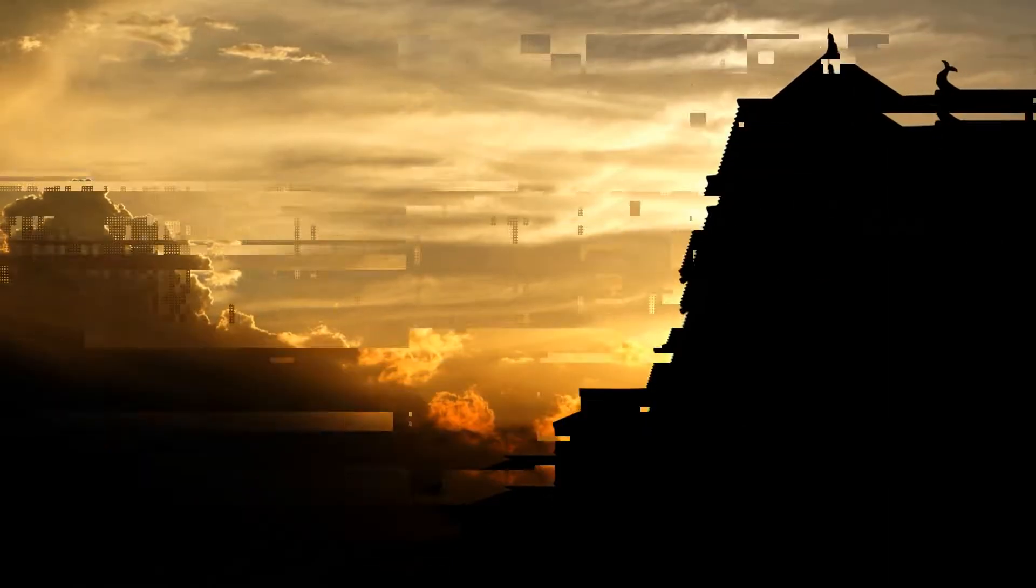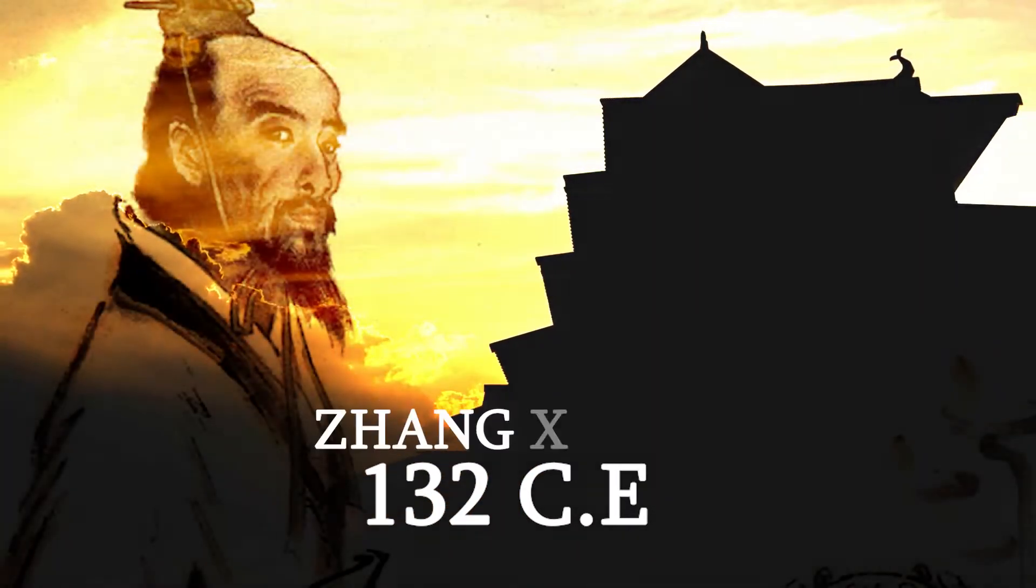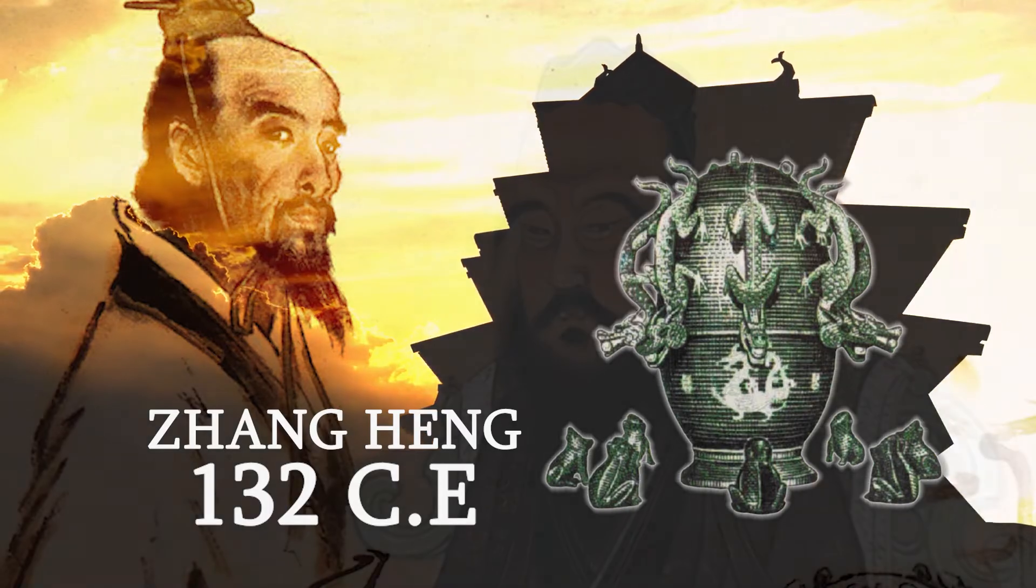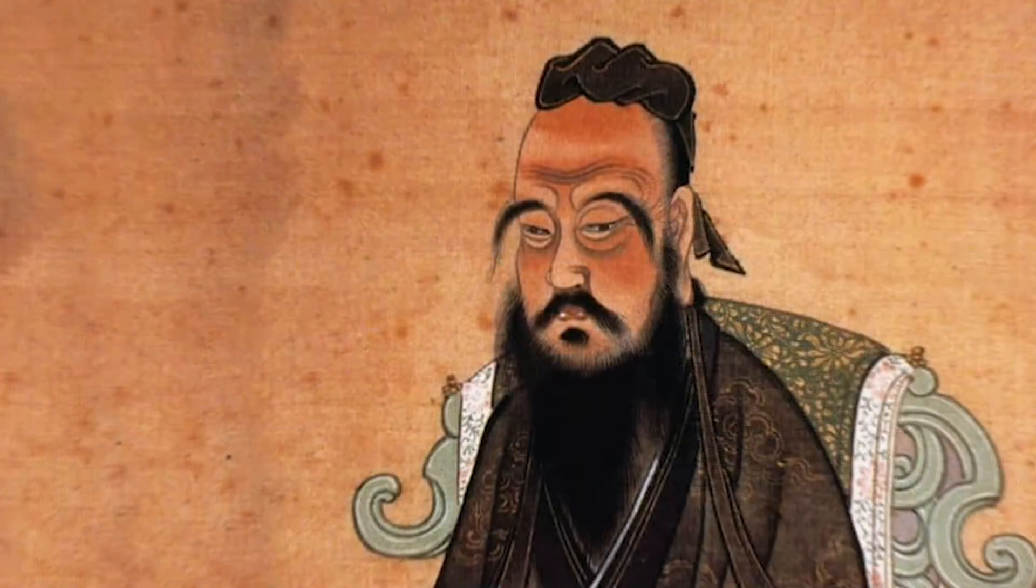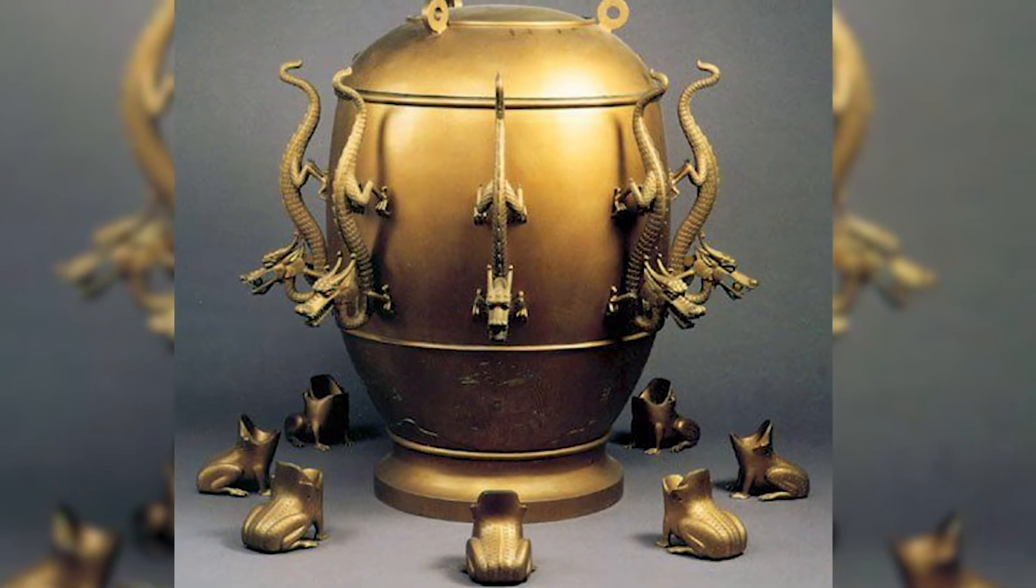The first ground motion detectors: In 132 CE, Chinese astronomer and mathematician Zhang Heng created the first known earthquake detector. Zhang Heng's seismoscope took the shape of a large vase surrounded by dragons with frogs at the base. When the ground moved, a ball would fall out of a dragon's mouth into a frog, making a noise.